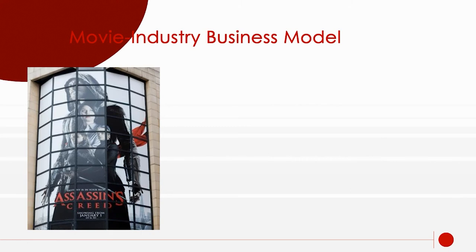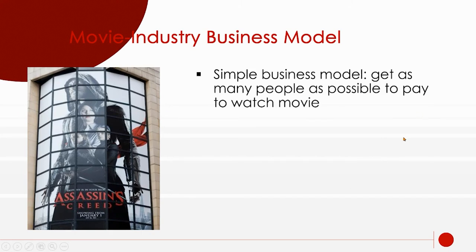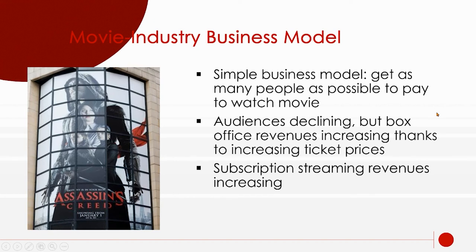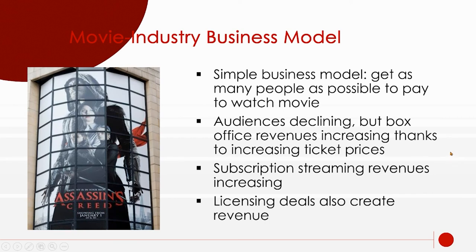The business model of the movie industry is to get as many people as possible to pay and watch your movie. Audiences are declining, but box office revenues have increased because of ticket prices. Subscription streaming revenues are increasing. Licensing deals are also creating revenues — video games from movies, merchandise, TV shows from movies. 'Assassin's Creed' is a good example of a movie tied into a larger media conglomerate.